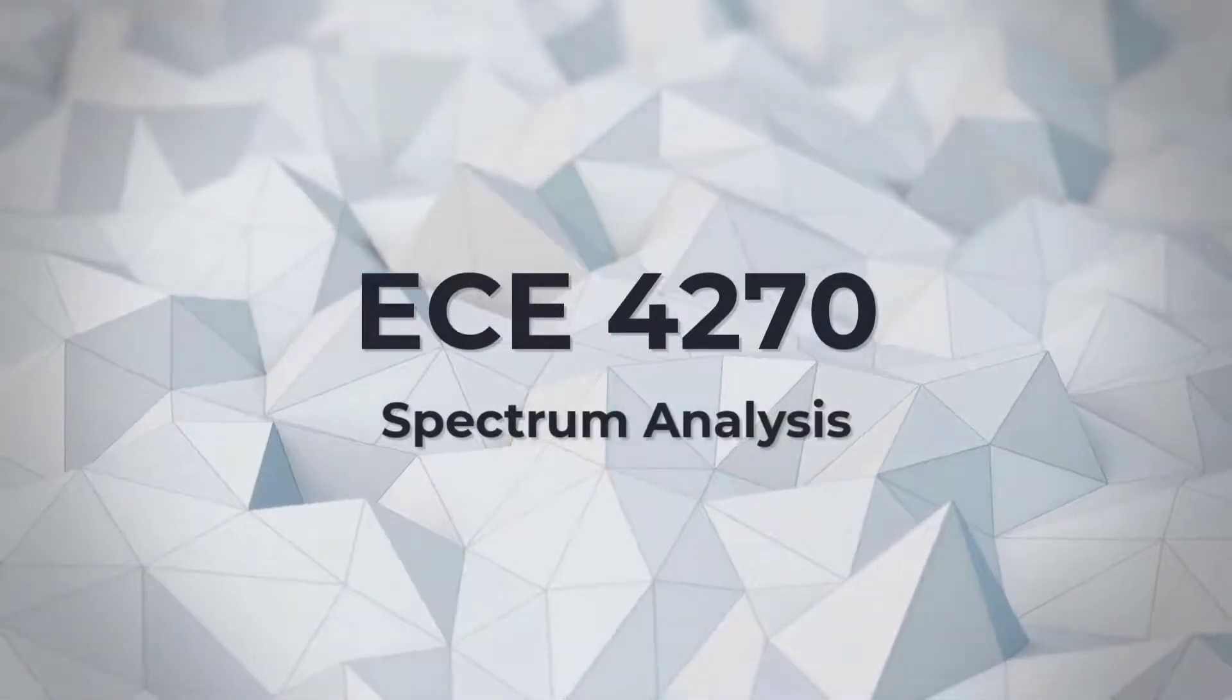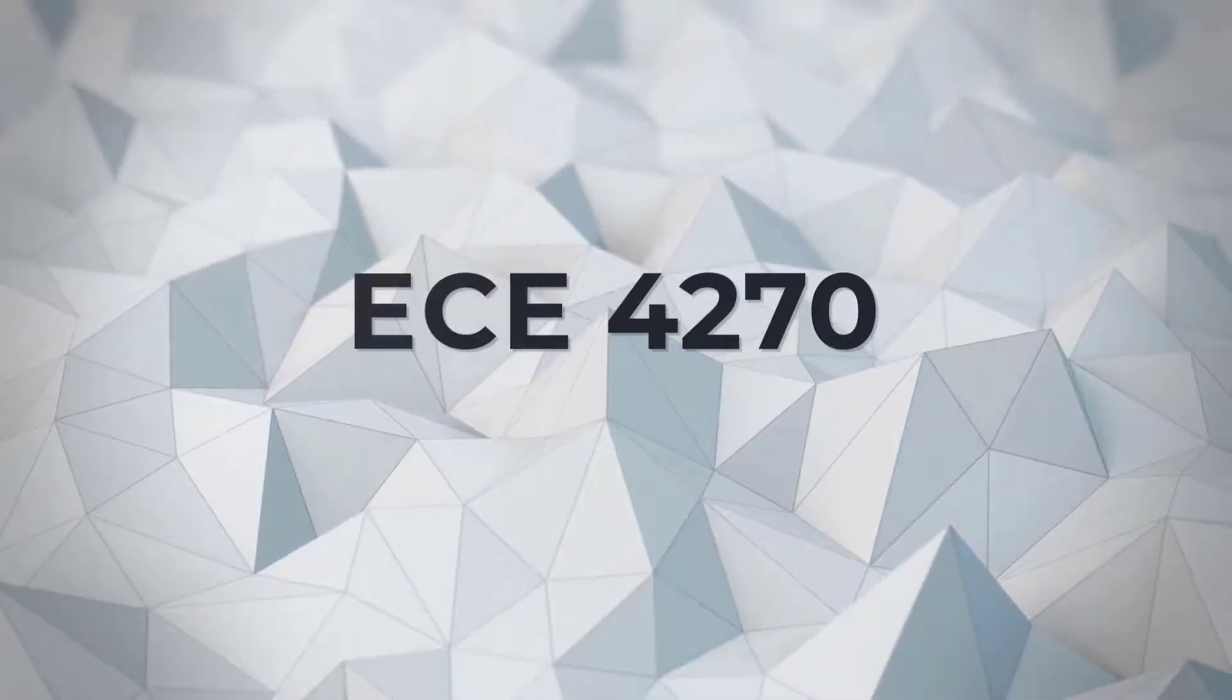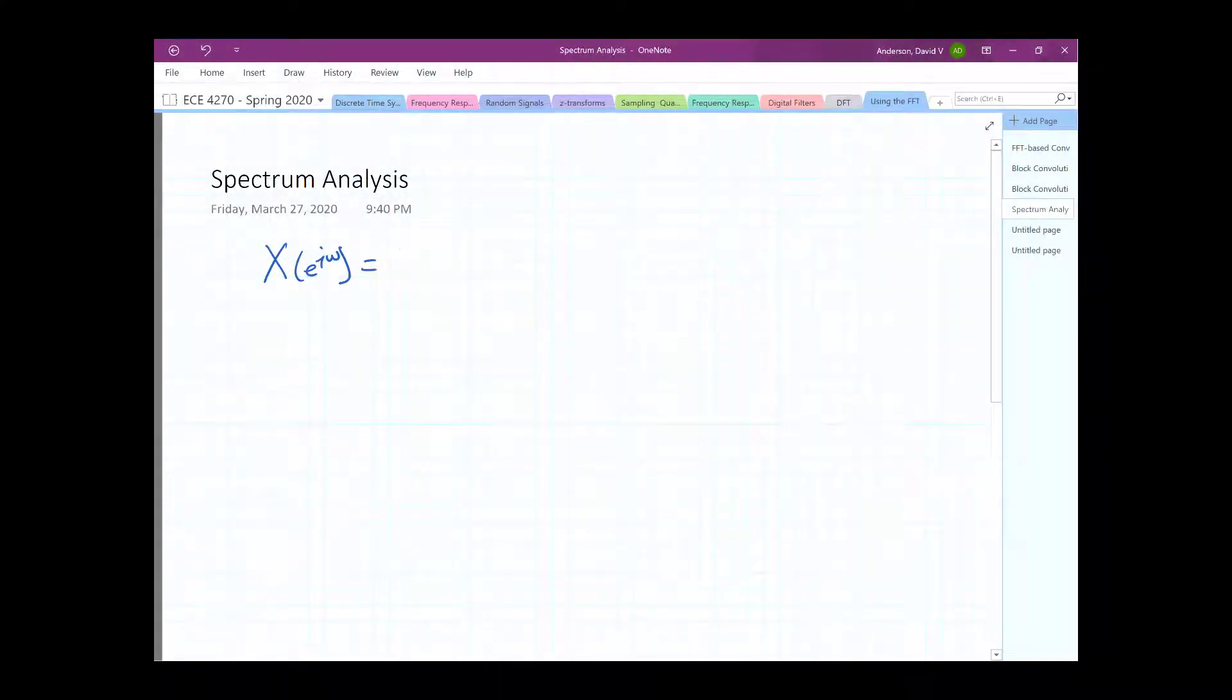So, as you may recall, in the past we were working with the discrete time Fourier transform, which was defined as the sum over all time, x of n, e of negative j, omega n. And there we go, you have the spectrum. However, we've discussed that this is not very practical, we would rather have something computable, and so we came up with the discrete time, or discrete Fourier transform, as opposed to the discrete time Fourier transform.